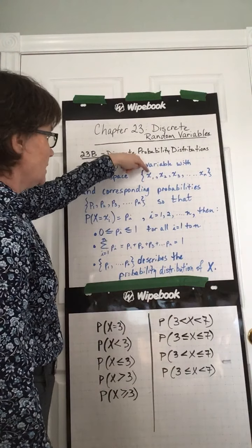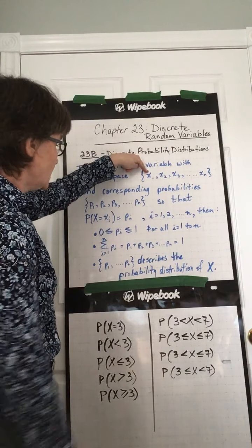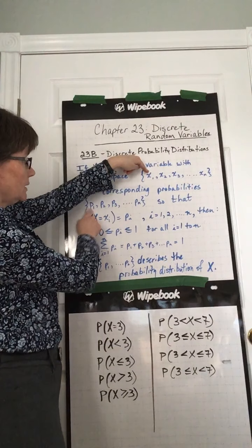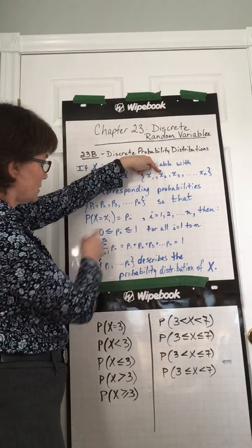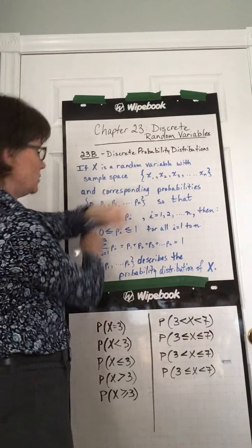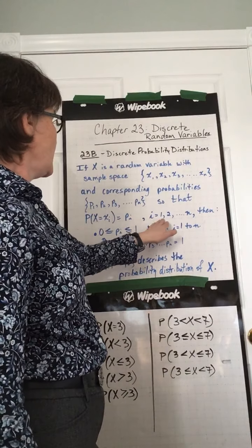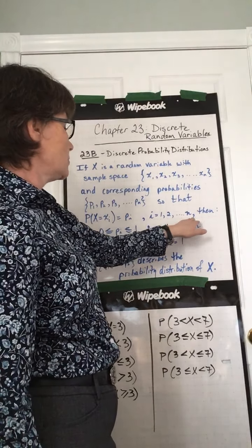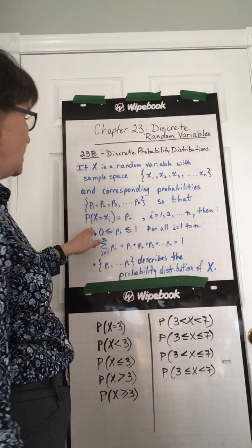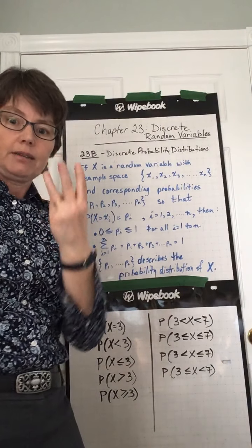Just like I already said, the probability that x is this is this probability. The probability that x is x2 is the probability of P2. Where i represents 1, 2, 3, all the way up to n, then these three things are true.